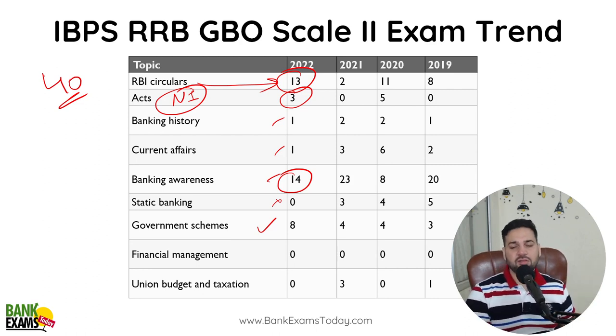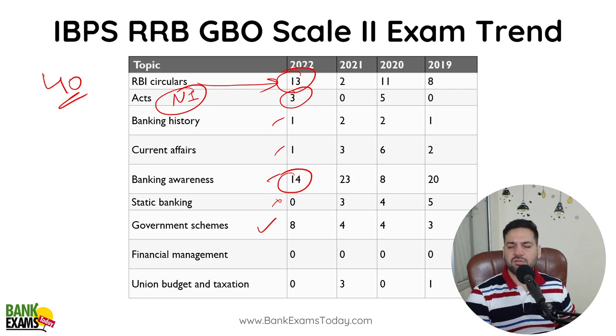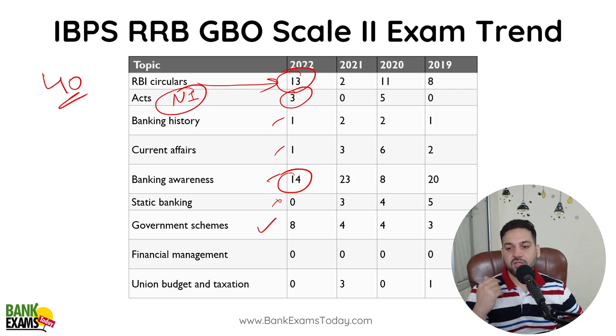Mudra Yojana, Jan Dhan Yojana, Sukanya Samridhi Yojana, PPF, NPS, Atal Pension Yojana, Vaya Vandana Yojana — all these schemes are very, very important. There are about 15 schemes in the list. I have already covered them in the course, please check.